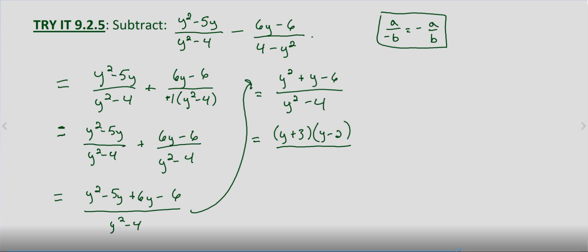And then in the denominator, we have a difference of squares, which means we have y minus two times y plus two. The y minus twos cancel, and we end up with y plus three over y plus two.